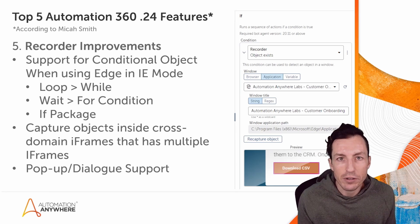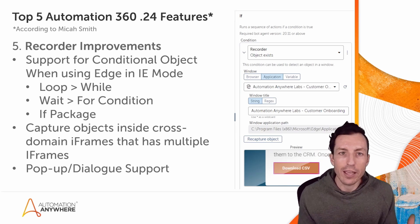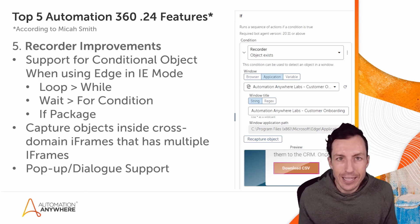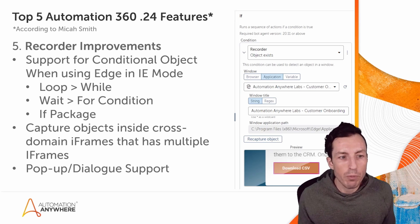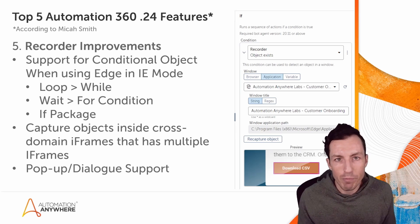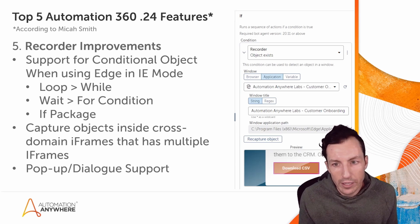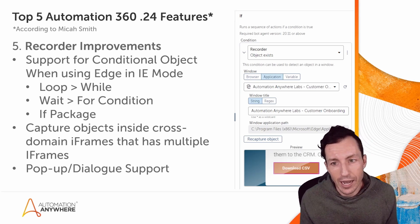One of the features in this particular release was support for conditional objects when using Edge in IE mode. If you're using Edge, you have the ability to open any page or web application in IE mode, which is basically a virtualization of what it would look like in Internet Explorer. We now have support for the Loop While, Wait for Condition, and the If package — you can detect if objects exist or don't exist and set up your conditions accordingly. On the right-hand side here you can see we're checking if an object exists on a page using Edge in IE mode.